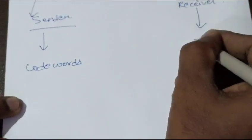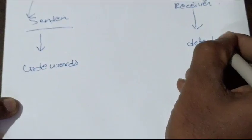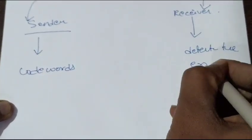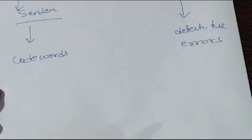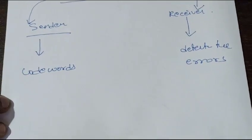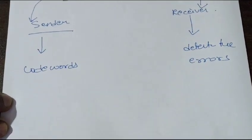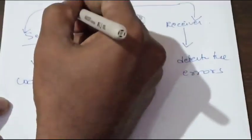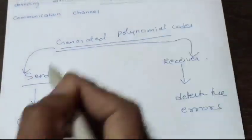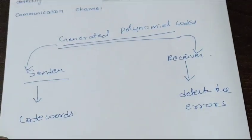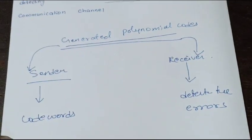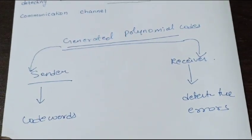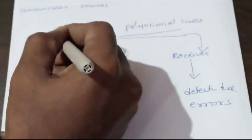At the receiver side, the same polynomial which was used at the sender side will help to detect the errors if present. In this video I will show you the list of these generated polynomials.